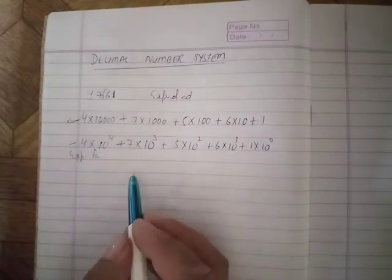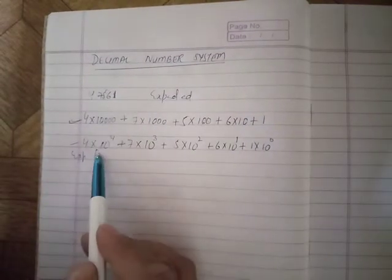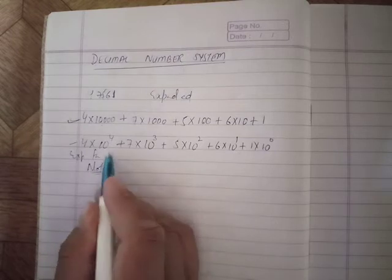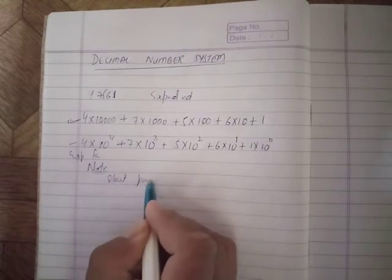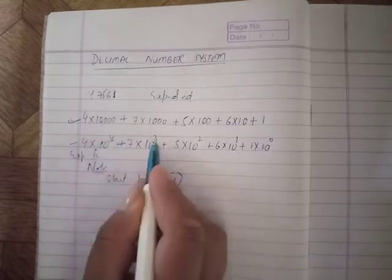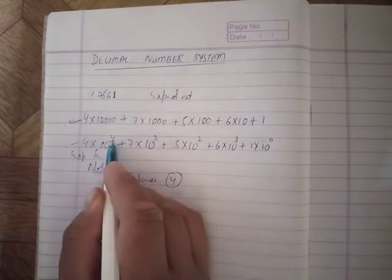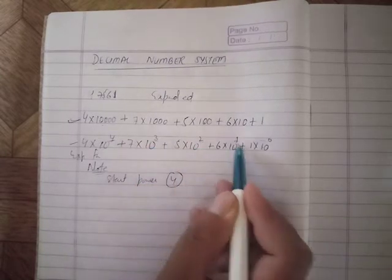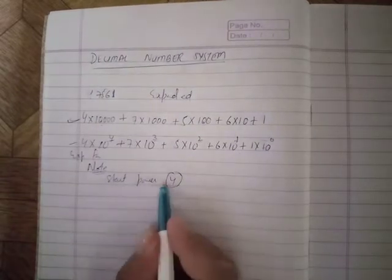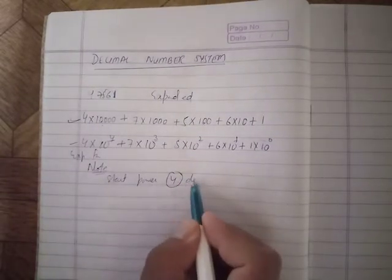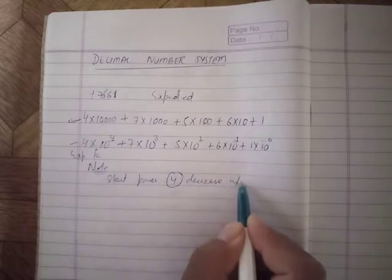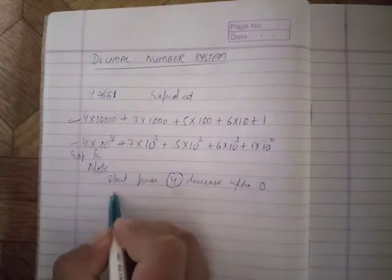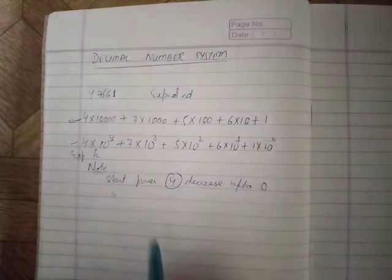This is the exponential form. When you expand this, notice the powers start from 4 and decrease. The powers go 4, 3, 2, 1, 0 - always decreasing.